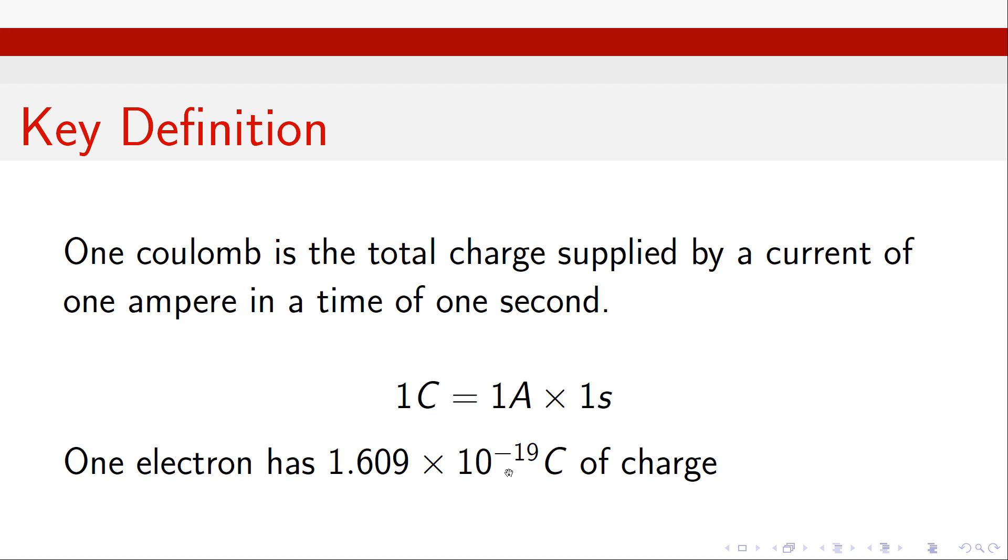Current is the net flow of charge. So if we imagine our electron and it is charged, if this electron starts moving around, it is flowing, then that is a current.